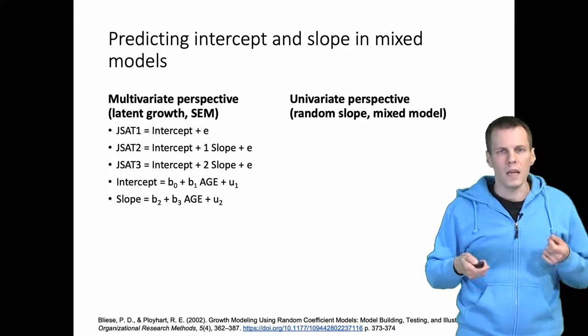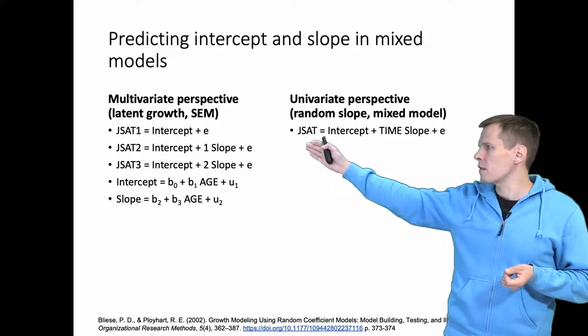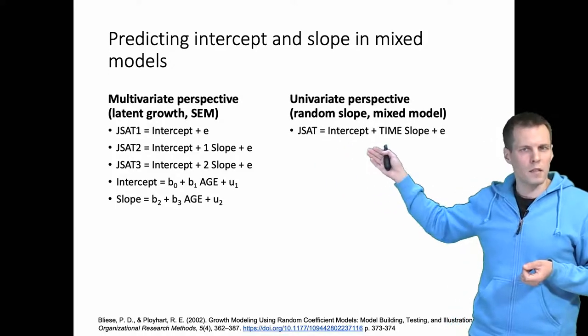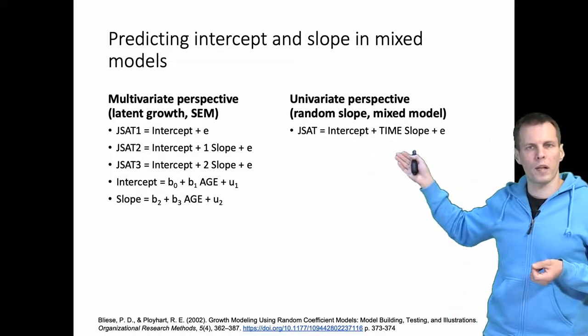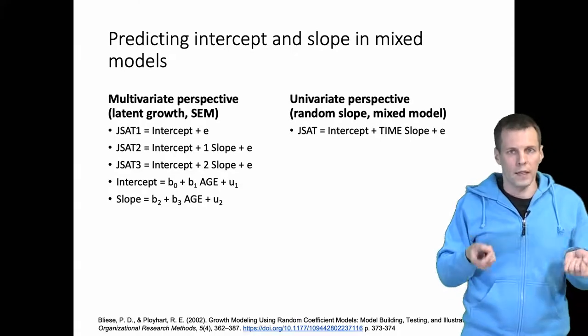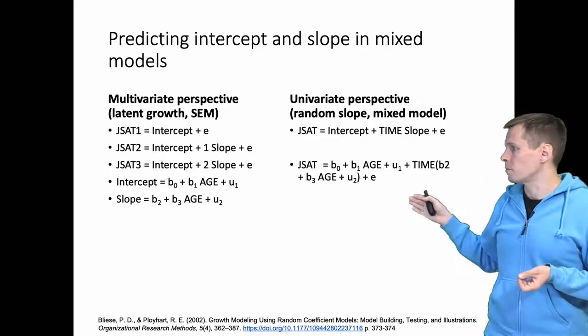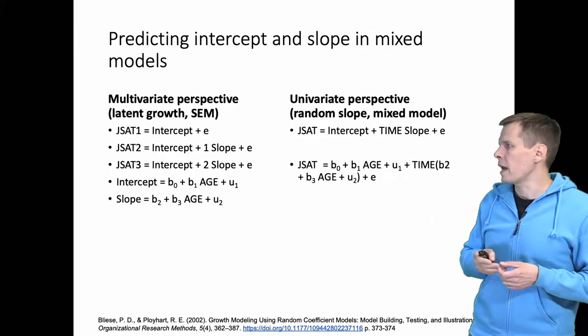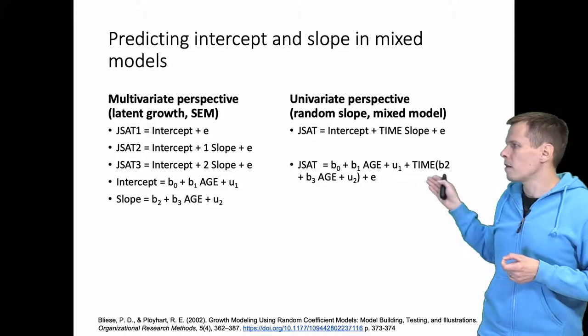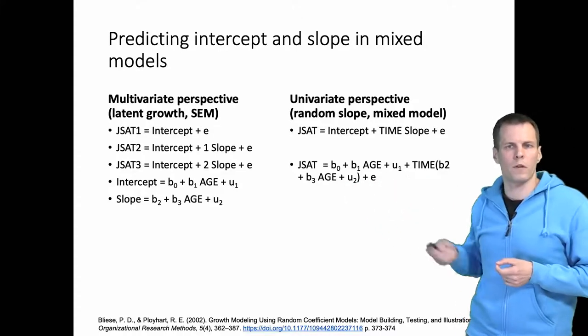We can take a look at the same in the mixed model format. We say job satisfaction is intercept plus time times slope plus e, where intercept and slope are latent variables. The intercept term is determined by age, and this slope here is determined by age, and they both have random effects.